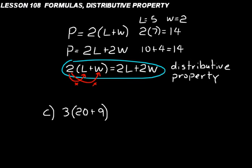Look at problem C. Use the distributive property to do that multiplication — don't just do 3 times 29 directly. Do the distributive property: 3 times 20, which is 60, plus 3 times 9, which is 27. That equals 87.